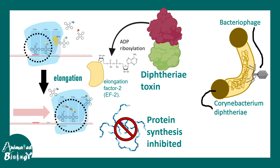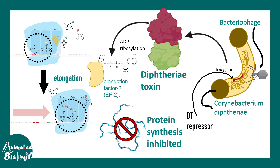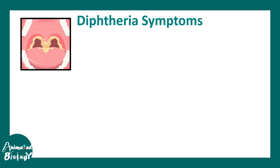The diphtheria toxin is encoded by a gene known as the tox gene, which is incorporated into the bacteria by a bacteriophage and encodes for the diphtheria toxin. Notably, tox gene expression can be repressed by the DT repressor, and this repressor is augmented by ferrous iron levels.